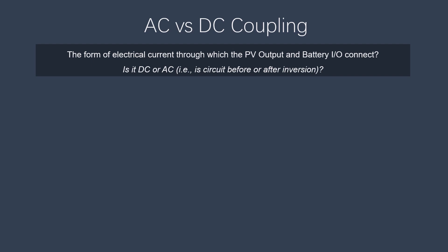AC versus DC coupling. The terms AC coupling and DC coupling are commonly used to refer to the connection between a PV output and a battery input. The electrical current running through that connection could be DC, or it could be converted at some point to AC. Which of these is happening defines whether it's AC versus DC coupling.